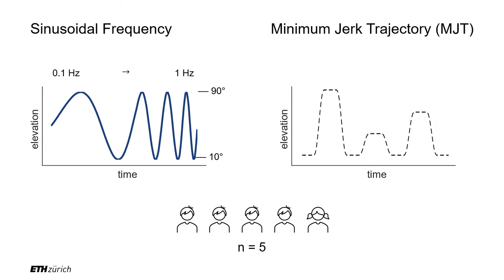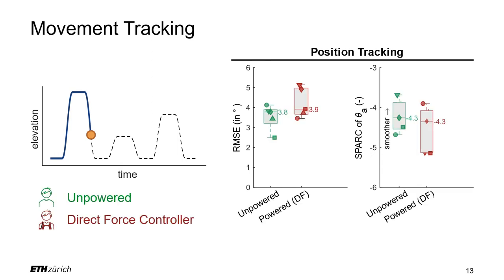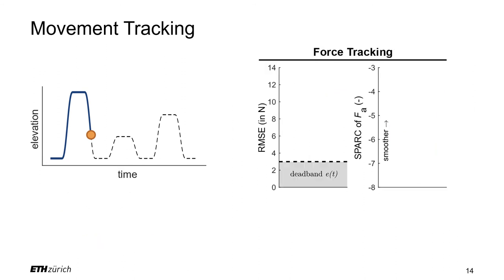In the second part of the study, participants followed a minimum jerk trajectory with varying elevation heights. Position tracking errors and movement smoothness were comparable for the unpowered, the direct force controller powered, and the indirect force controller powered conditions.